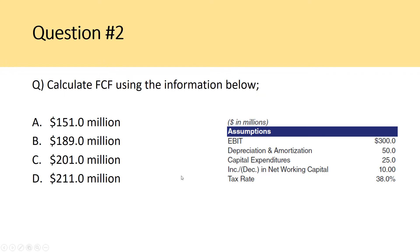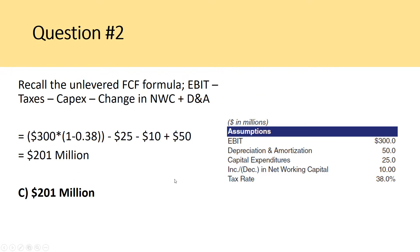So the answer to question two is C. We calculate our net operating profit after tax, take away capital expenditures and our increase in net working capital, and then add back the non-cash charge of depreciation of $50 to get $201 million.